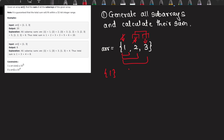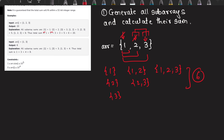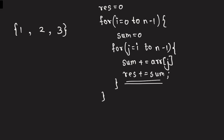So the six possible subarrays generated are: one; one-two; one-two-three; two; two-three; and three. Their sums are one plus three plus six plus two plus five plus three, which turns out to be 20.